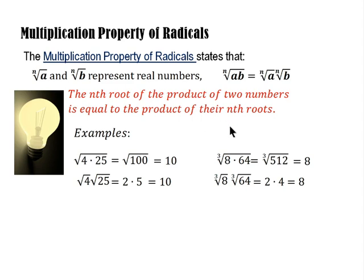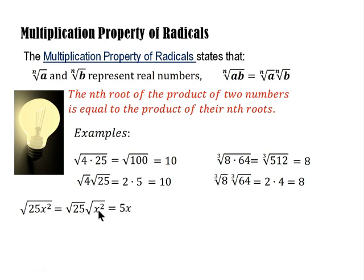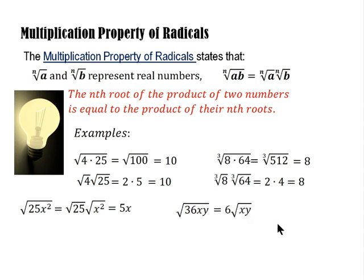Another example: the square root of 25x². We get the individual square roots — the square root of 25 is 5, and the square root of x² is x, so the result is 5x. For the square root of 36xy: since 36 is a perfect square, its square root is 6. However, x and y are not perfect squares, so they remain inside the radical, giving 6√(xy).